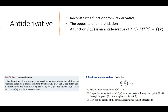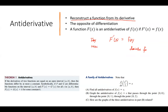So what does it mean to take the antiderivative? Basically, it means that we're going to reconstruct a function from its derivative. If we take the derivative of a raw function, we get a new function — the derivative function. We express f of x as the raw function, and by performing the differentiation operation, we obtain the derivative function.